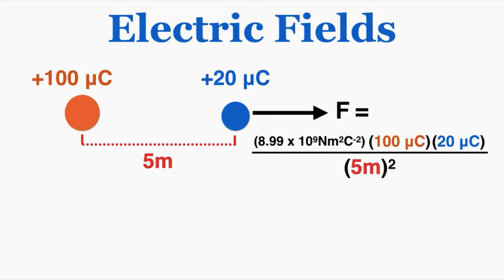Plugging these numbers in, this is the equation for the force that that charge will experience. I would just have to convert those micro coulombs into coulombs by multiplying by 10 to the negative sixth. I'm not going to carry out that math — instead I want you to observe a pattern. I'm going to imagine that I replace this 20 micro coulombs charge with a different charge. Just observe how the equation changes.